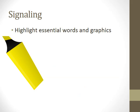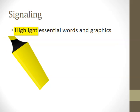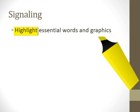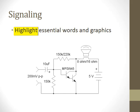When providing written text, you can highlight what is most important for the learner to know. When describing an electrical circuit with an accompanying graphic, you can highlight the name of the components or the picture of the components themselves when describing them.